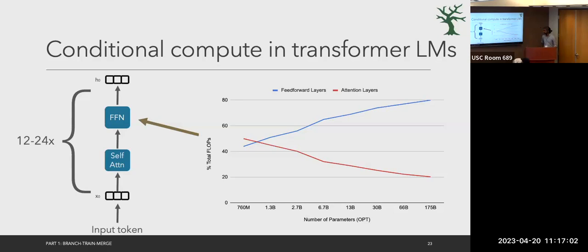In the literature, inducing conditional computation in transformer language models is usually focused on making the feed-forward layers sparse. The feed-forward layers are the workhorse of the transformer in terms of featurizing input, and they consume the most flops as we scale. Looking at OPT language models as a function of total parameters, the percentage of flops consumed by feed-forward layers grows substantially with model size. The question is whether we can make those feed-forward layers sparse to increase parameter count without the associated flops.